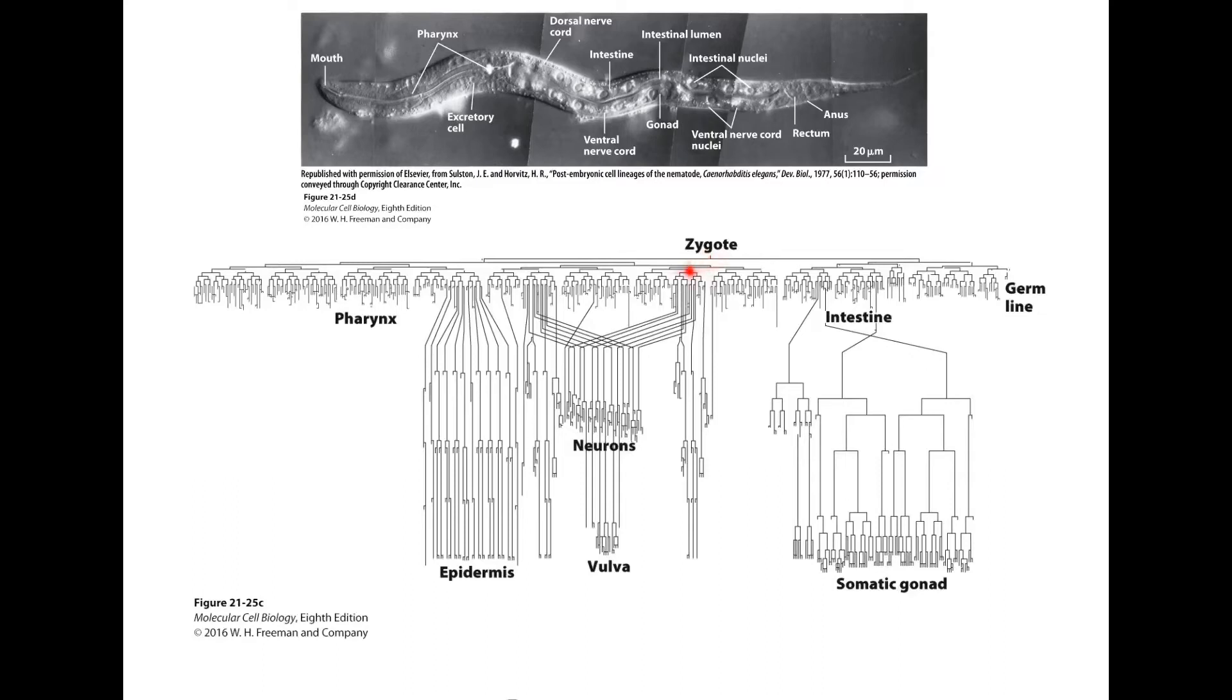It was possible to chart the fate of every one of the cells beginning with the zygote. The significance of that as far as apoptosis is concerned is that in going from zygote to adult, a little over a hundred cells form and then die. It's exactly the same hundred and something cells that die, so it's clearly the case of programmed cell death, death happening on purpose.